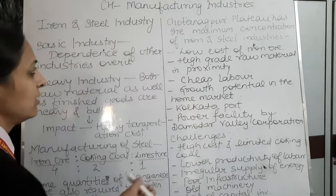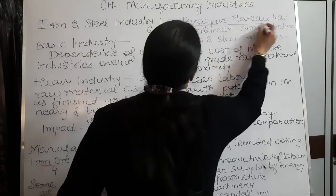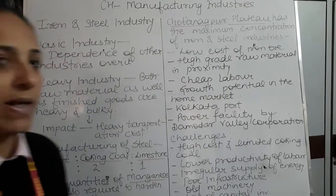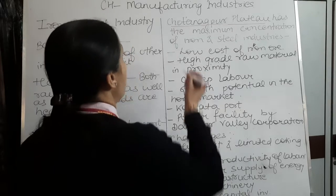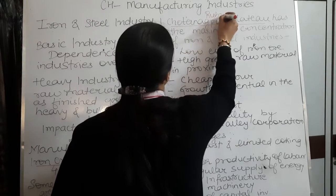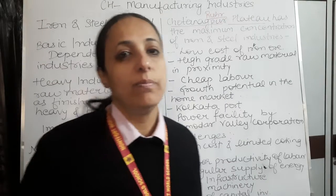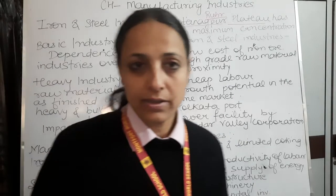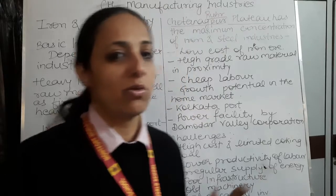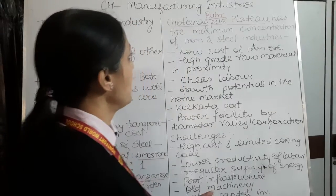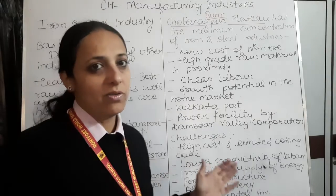The Chotanagpur Plateau has the maximum concentration of iron and steel plants and is called the 'Ruhr of India.' Ruhr is the leading industrial region of Germany. In 1923, this industrial region was occupied by France after Germany's defeat — when the allied forces occupied it following the Treaty of Versailles.